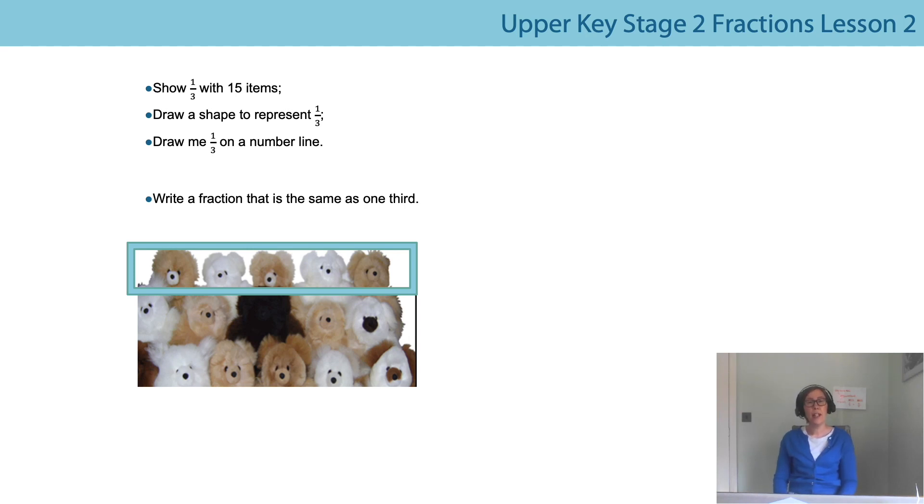I thought, I know, how about I use the total number of bears as my denominator? So it looked like this. In my one third part that I'd already found, I now had five bears. So five out of 15, which is a fraction of five fifteenths. I thought, this sounds like I might have done the right thing.